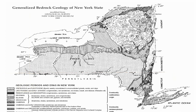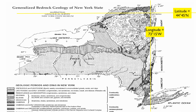Let's take a look at one more city, and that's going to be Plattsburgh. The latitude for Plattsburgh is definitely in between 44 degrees and 45 degrees, so it's going to be 44 degrees 45 minutes north. Longitude is going to be 73 degrees 15 minutes west. And again, you take a look at your coordinates: 44 degrees 45 minutes north, 73 degrees 15 minutes west.